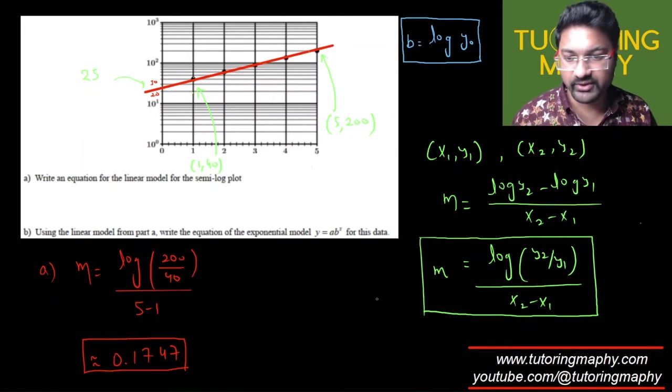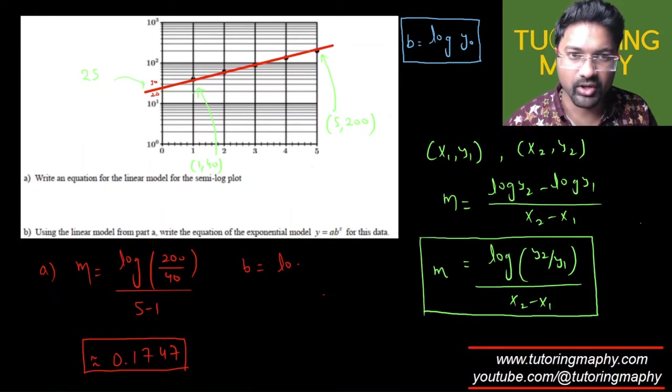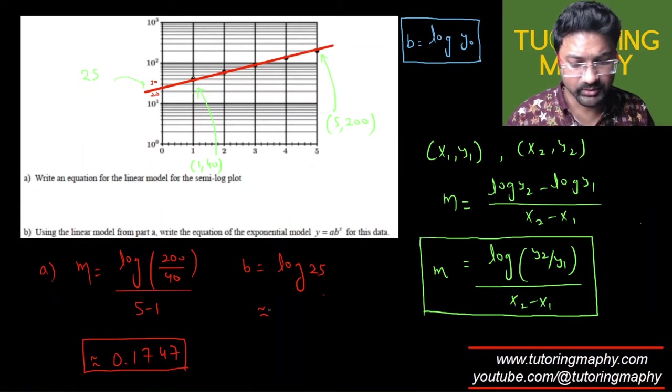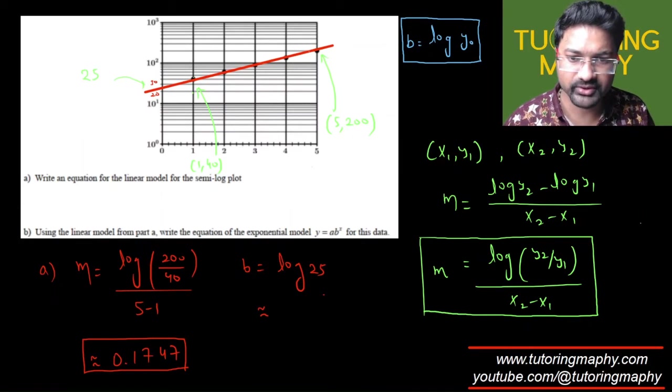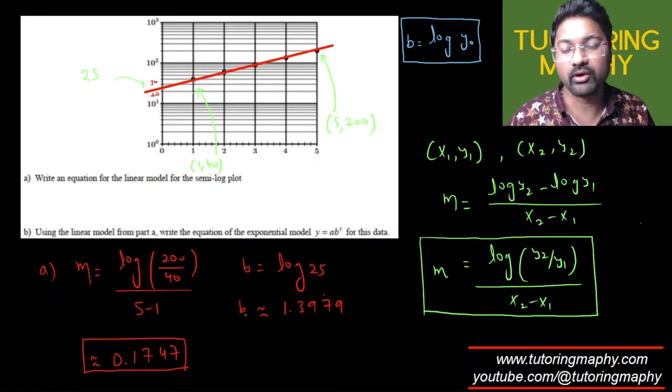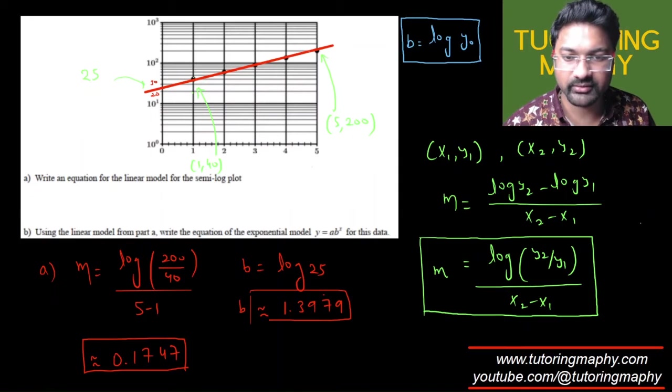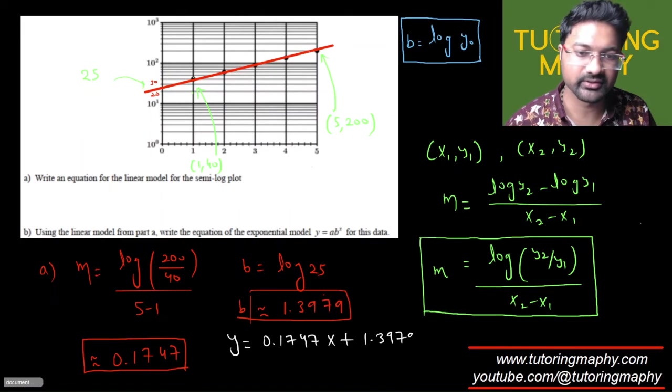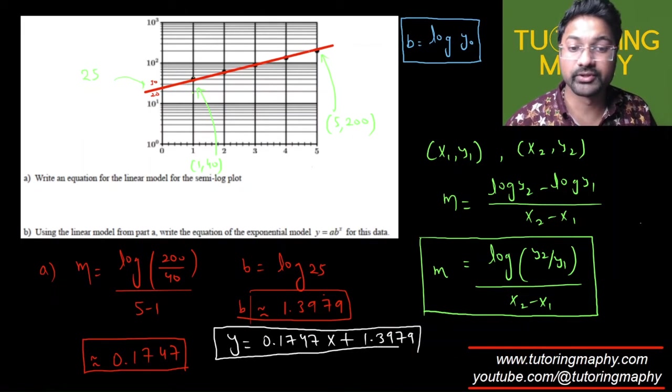So this is my slope, and the y-intercept is going to be b is equal to log of y₀. y₀ is 25, so approximately 1.39, around maybe 1.40, 1.3979 if I were to go to four decimal places. So I got my b, I got the value of m. All I need to do is write the equation, which is going to look like y is equal to mx plus b, where m is 0.1747x plus b is 1.3979 over here. Right, so this is how we convert a semi-log into a linear plot.